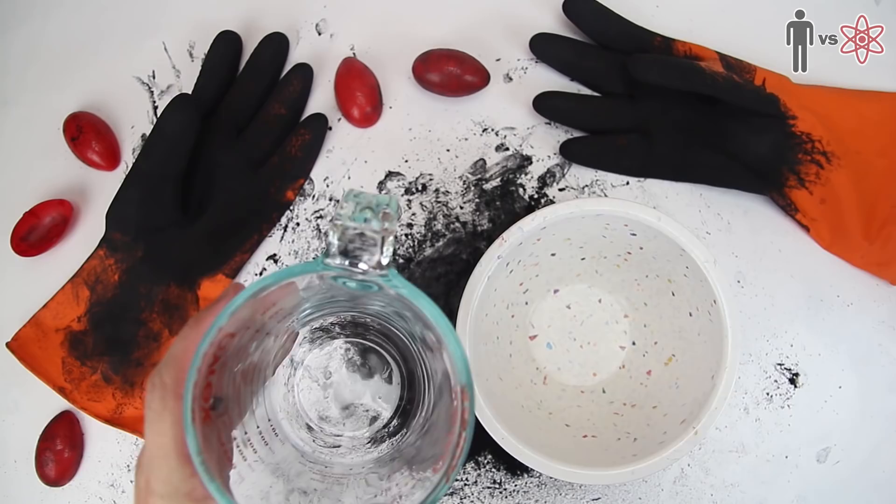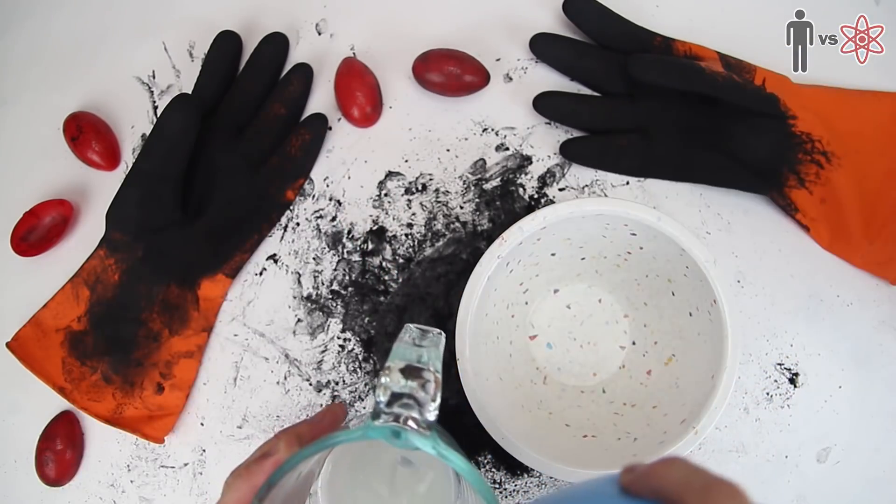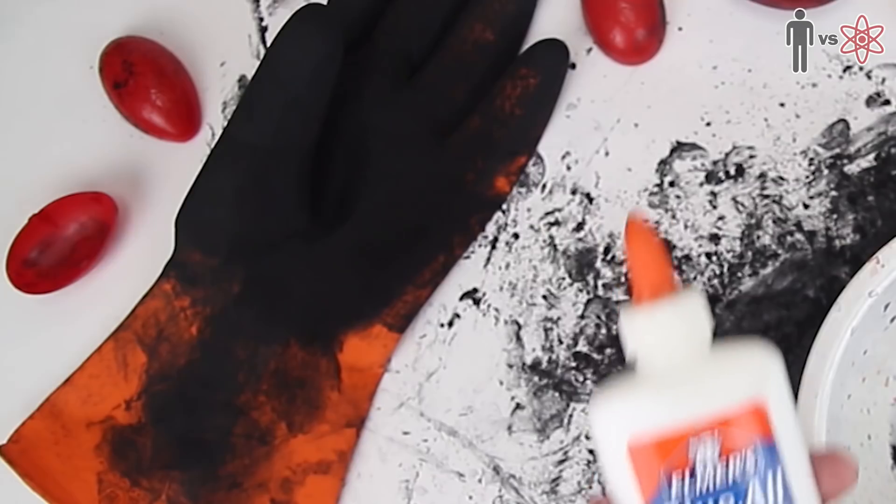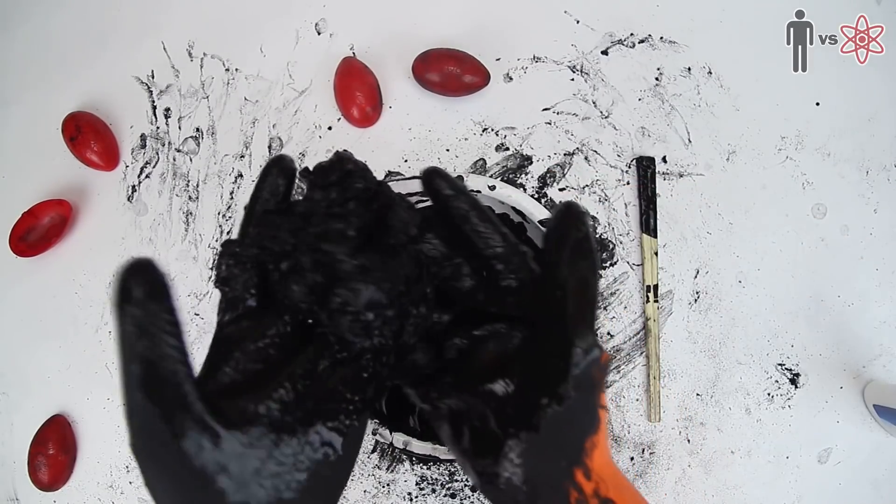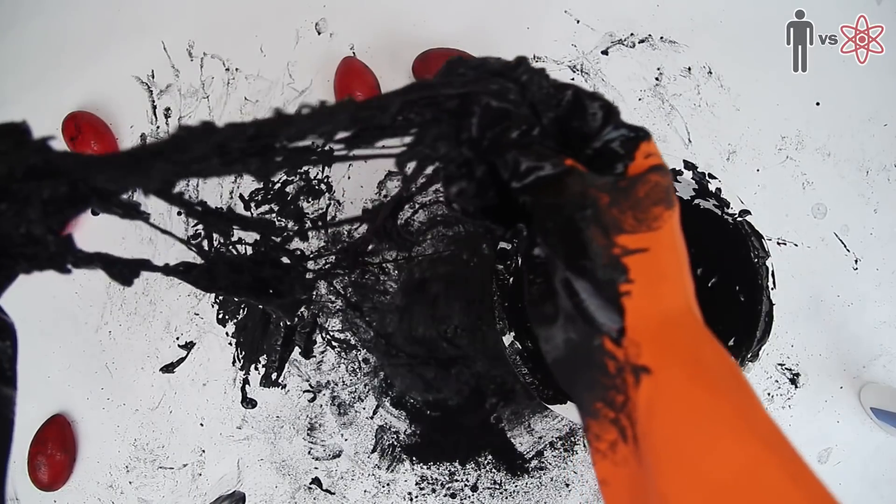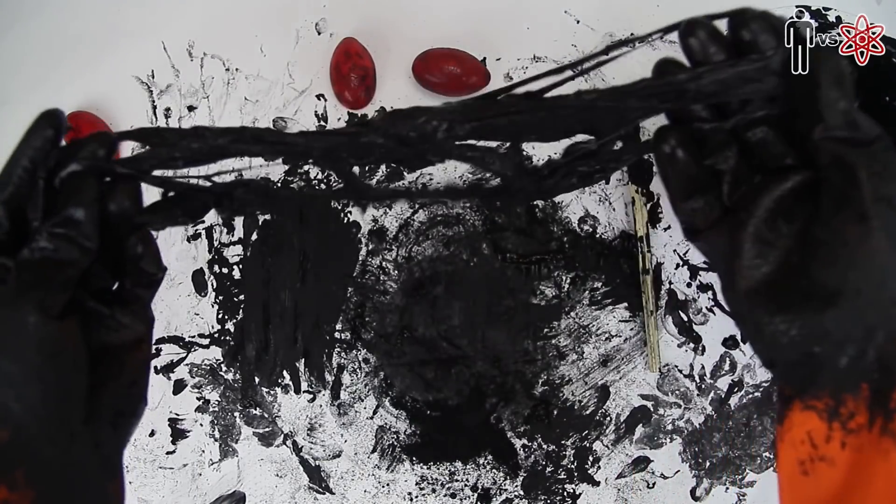Now I heard of another method where I could make the putty myself using some liquid starch, some Elmer's glue, and some iron oxide powder. This turned out, however, to be a disaster. Way, way more of a mess than I needed to make for myself.